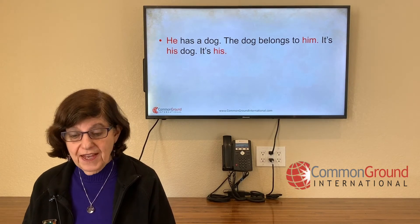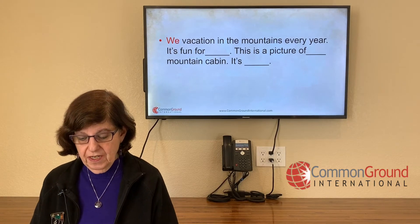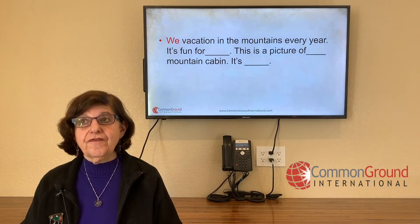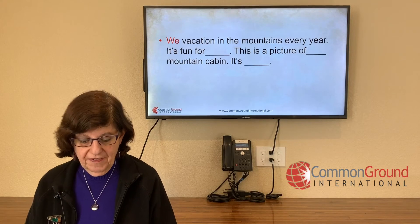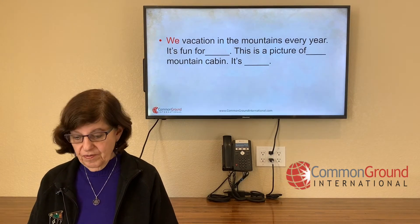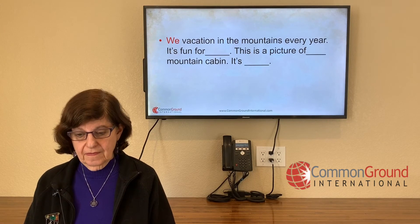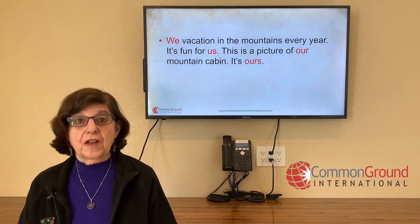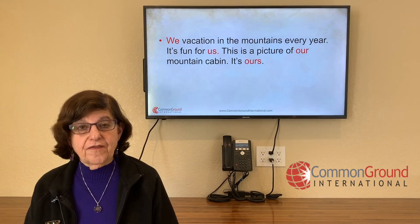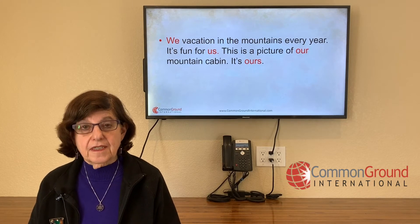Does everybody understand that? Let's try another one. First-person plural: 'We vacation in the mountains every year. I gave you that. It's fun for blank — object. This is a picture of blank — possessive adjective — mountain cabin. It's blank — possessive pronoun.' We vacation in the mountains every year. It's fun for us. This is a picture of our mountain cabin. It's ours.